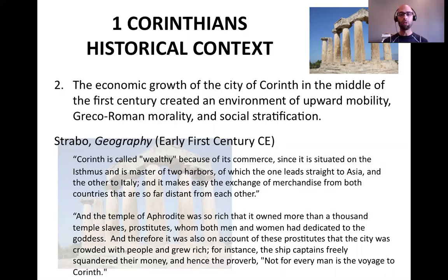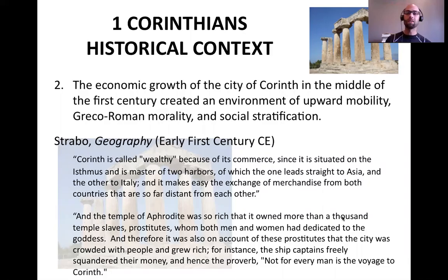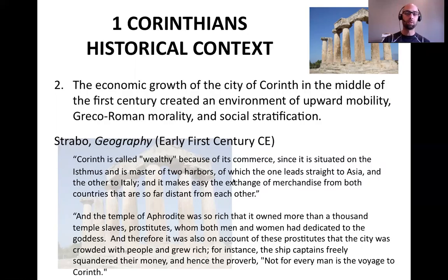Strabo says: 'Corinth is called wealthy because of its commerce, since it is situated on the Isthmus and is master of two harbors, of which the one leads straight to Asia and the other to Italy, and it makes easy the exchange of merchandise from both countries that are so far distant from each other. And the temple of Aphrodite was so rich that it owned more than a thousand temple slaves, prostitutes, and therefore it was on account of these prostitutes that the city was crowded with people and grew rich.' Hence the motto, 'Not for every man is the journey to Corinth.' So Corinth was something of the Las Vegas of its day — a boom town where people went to get rich quick and sailors would go to party.